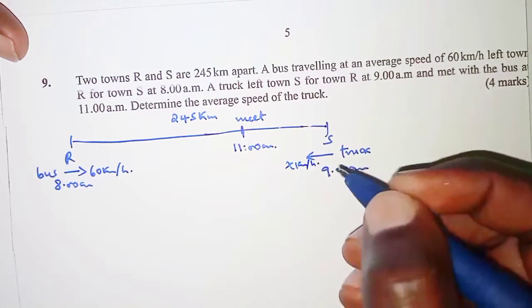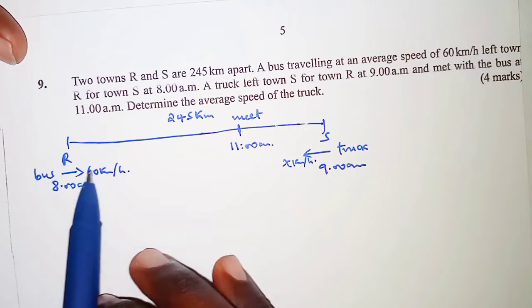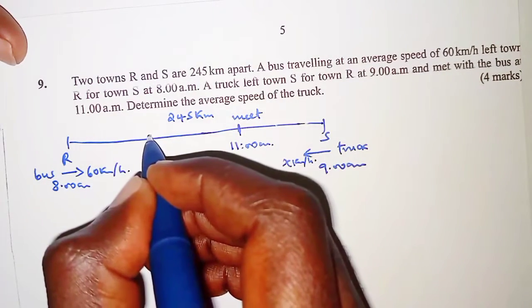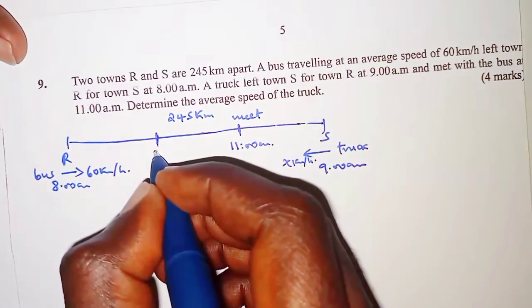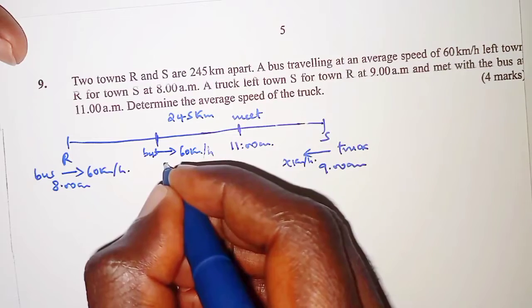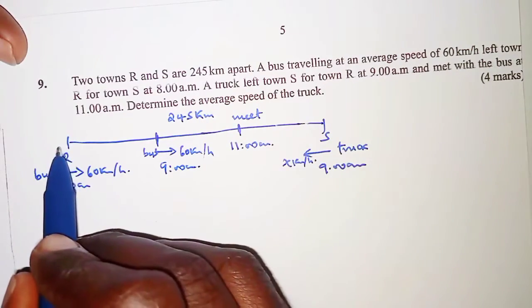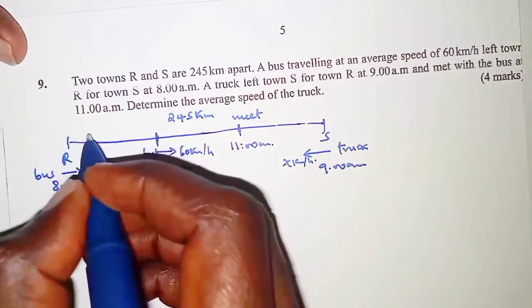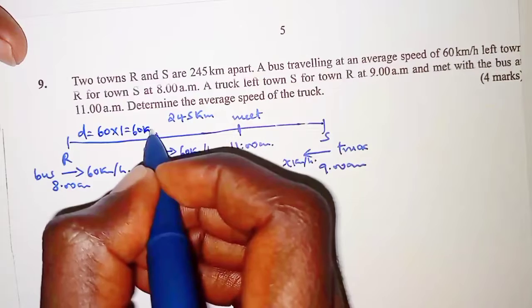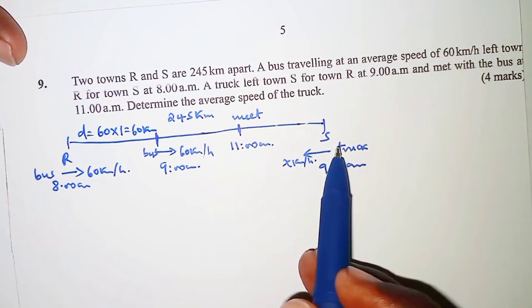The first thing we need to determine is the distance the bus had covered by 9 a.m., when the truck was leaving town S. At 9 a.m. the bus is somewhere along the route, still moving at 60 kilometers per hour. That is a difference of one hour, so the distance covered is speed times time: 60 × 1 = 60 kilometers.